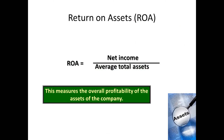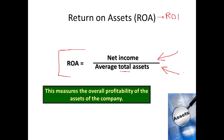Along with this is return on assets. This book calls it return on assets, but be aware that some books call this ROI — return on investment. We compute ROA by taking net income over average total assets. This measures how well we are generating income from the assets that we have — it's the measure of overall profitability of company assets. We want to maximize this ratio; we want it to be high.